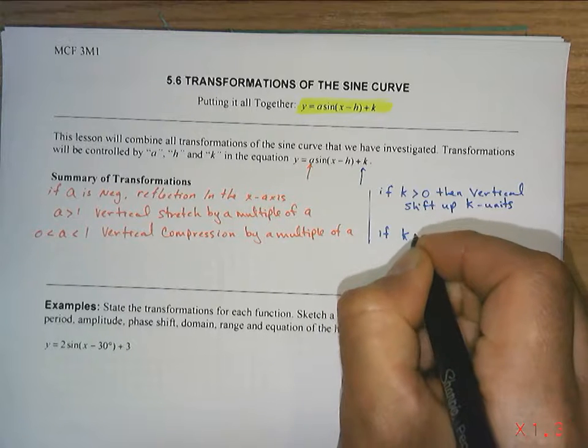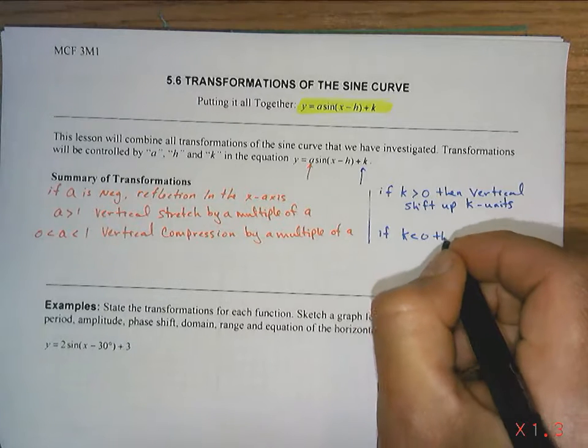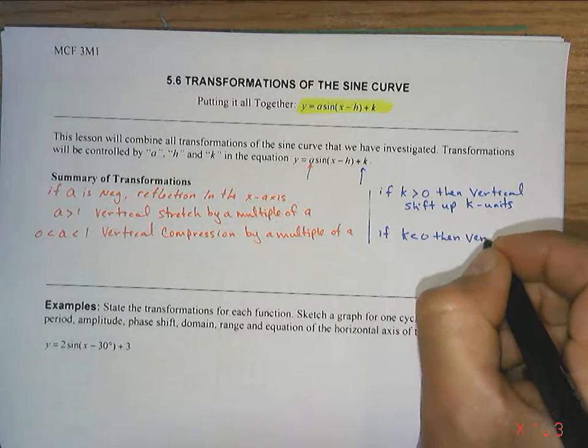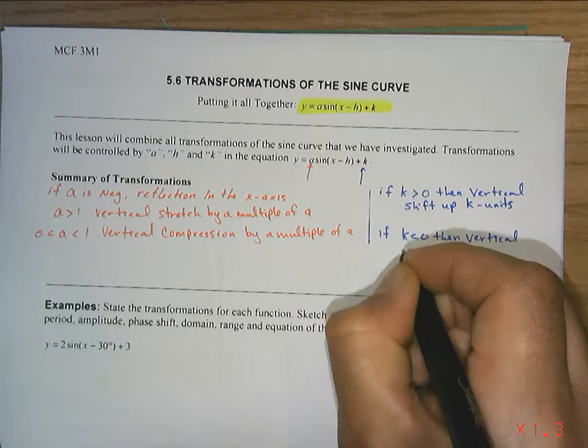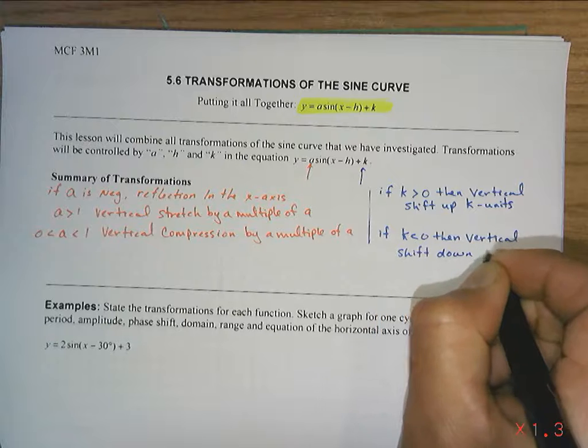And if K is negative, that's the way we say negative, less than zero, then we have a vertical shift down K units.